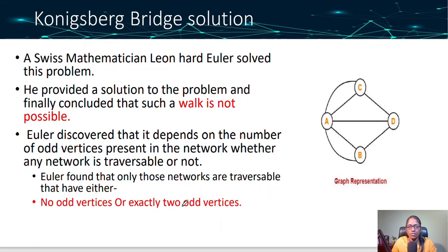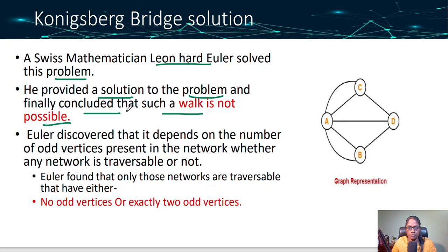After analyzing this problem, we come to the solution. Swiss mathematician Leonhard Euler solved this problem and concluded that such a walk is not possible. Euler also discovered that traversability depends on the number of odd vertices present in the network. Only those networks are traversable that have either no odd vertices or exactly two odd vertices.